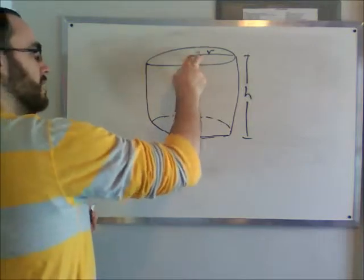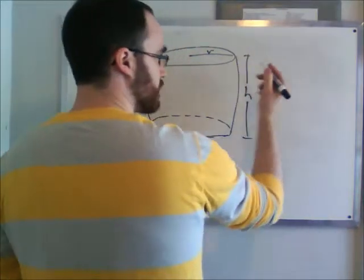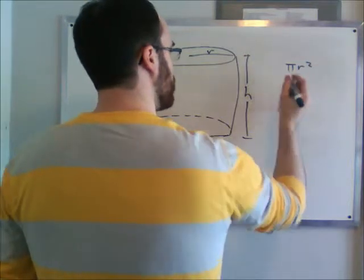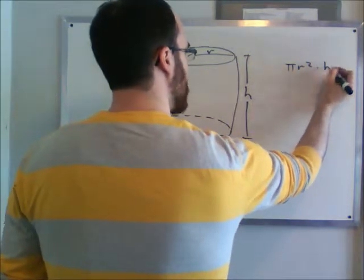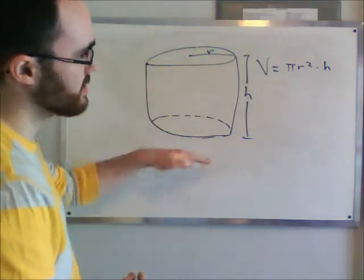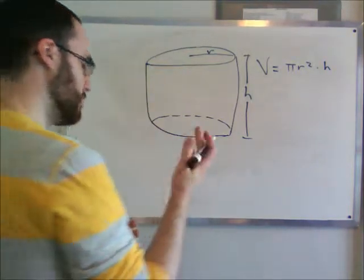We know the area of the top is pi r squared, because it's a circle. If you want to find the volume, we just multiply it by h. So it's the area of the surface multiplied by the height of the object. Volume equals pi r squared h.